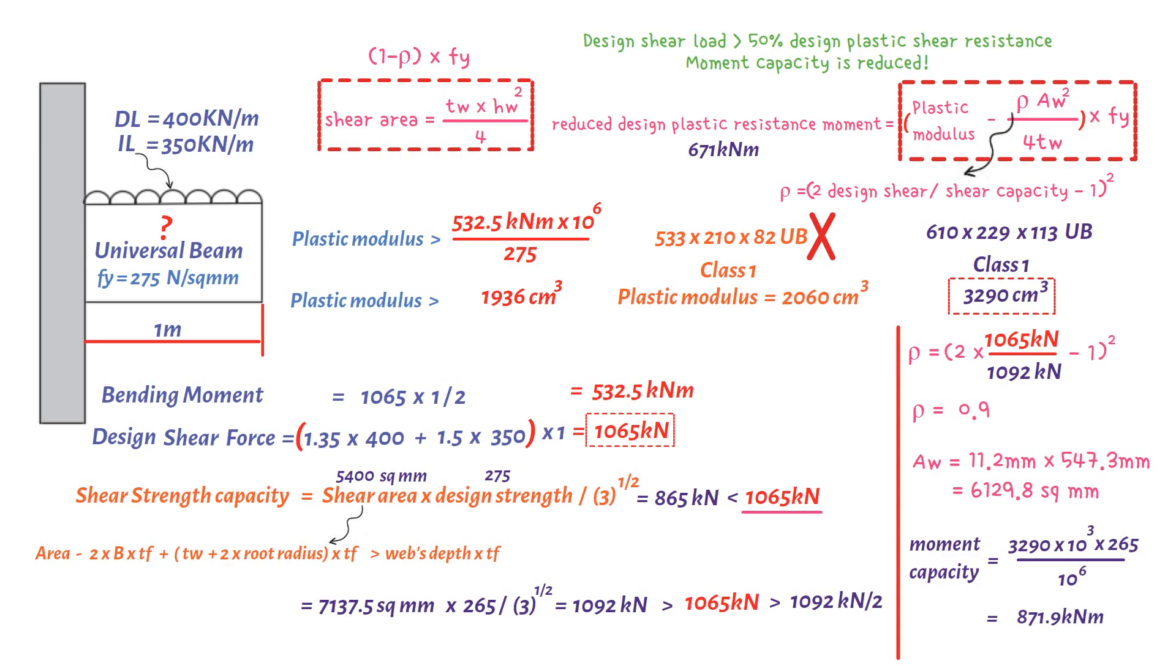The reduced design plastic resistance moment 671 kilonewton meter must be greater than design moment. In our example the design moment equals 532.5 kilonewton meter, but this doesn't include the self-weight of steel beam. Therefore, the bending moment due to self-weight of the beam would be 113 kilogram per meter times 9.81 divided by 1000 multiplied by 1 divided by 2 multiplied by 1.35, which equals 0.75 kilonewton meter.